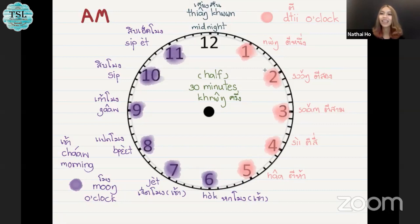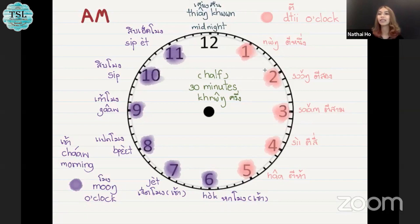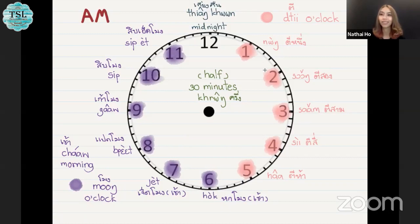ตีสอง, ตีสาม, ตีสี่, ตีห้า. After ตีห้า, this one we call it in the morning. So we can add part of the day. For example, 6 o'clock in the morning, we can say ตีห้า — the word ตีเช้า means in the morning. So you can skip this word as well.